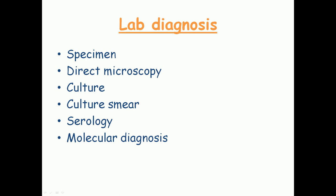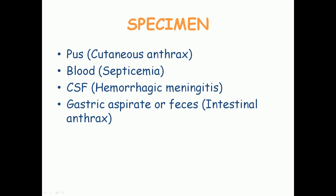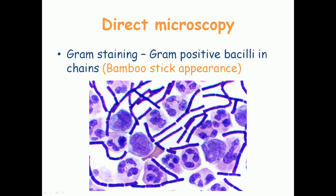The lab diagnosis of anthrax involves specimen collection, microscopy, culture, culture smear, serology, and molecular diagnosis. The specimens collected from anthrax-infected animals or humans are highly contagious, so all preventive measures must be taken before handling them. The specimens depend on the type of infection: for cutaneous anthrax with skin lesions, pus or skin swabs are taken; for septicemia, blood is taken; for hemorrhagic meningitis, the preferred sample is cerebrospinal fluid (CSF); and for intestinal anthrax, gastric aspirate or feces is collected.